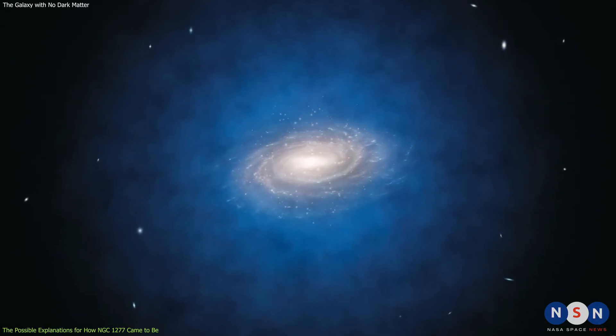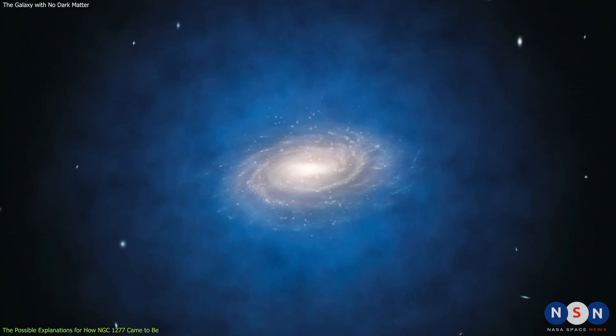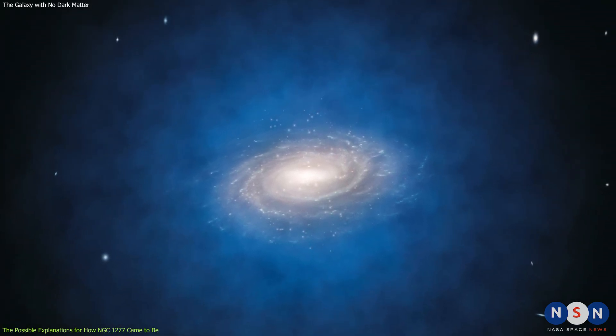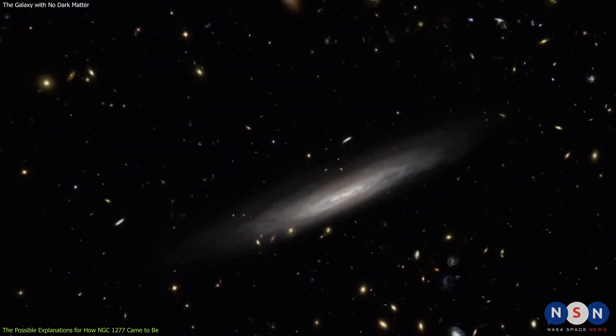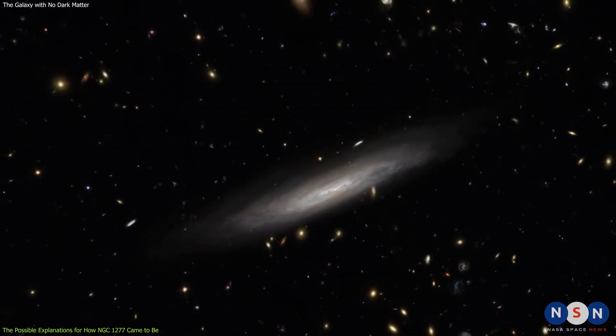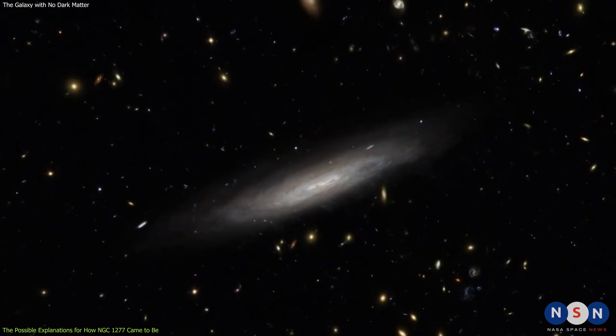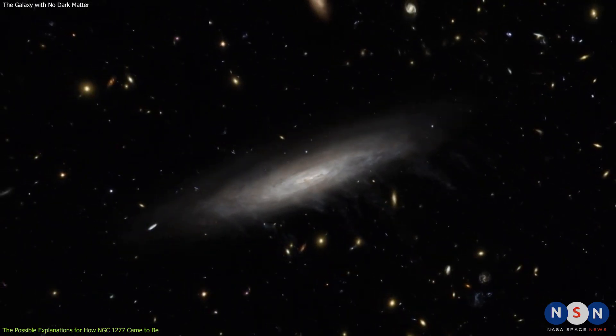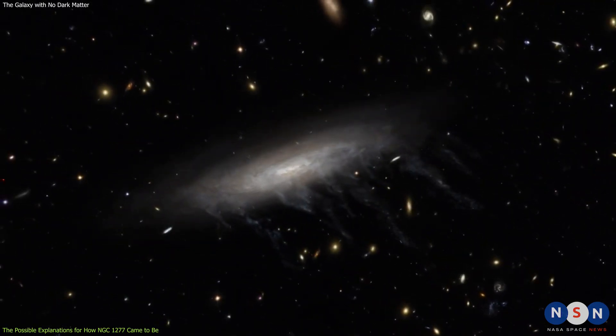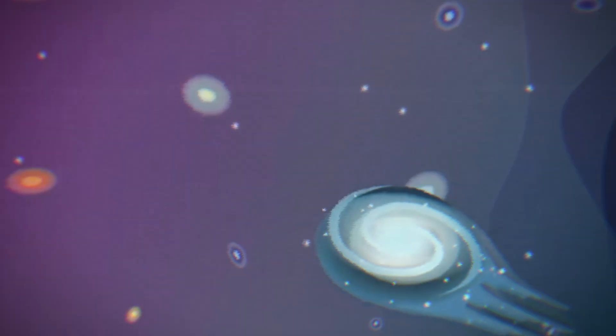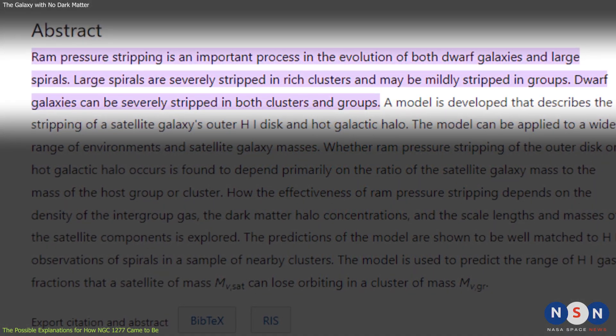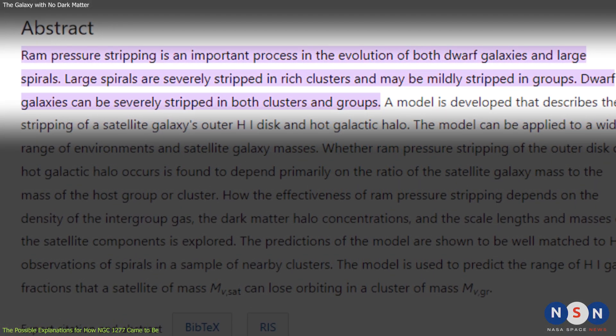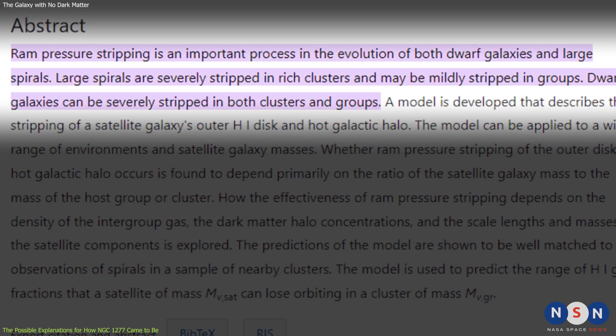The first scenario is based on the idea that dark matter halos are more extended and less bound than normal matter, and therefore more susceptible to tidal forces from other objects. When a galaxy moves through a cluster of galaxies, it experiences a drag force from the hot gas and a gravitational force from the other galaxies in the cluster. These forces can strip away some of the galaxy's outer layers, including its dark matter halo. This process is known as ram pressure stripping or tidal stripping, depending on whether the dominant force is gas or gravity.